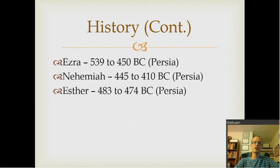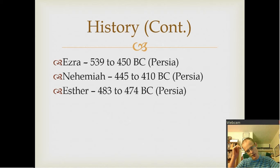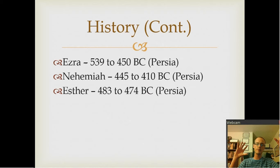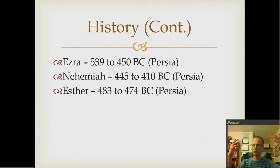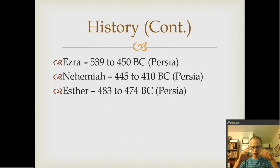The last three books of history: Ezra and Nehemiah were seen as connected books in Jewish custom, together covering 539 to about 410 BC. Ezra itself covers 539 to about 450 BC; Nehemiah covers about 445 to 410 BC — both in the time of Persia. Esther covers about 483 to 474 BC, fitting into a break in Ezra. Those are the rough approximate dates.